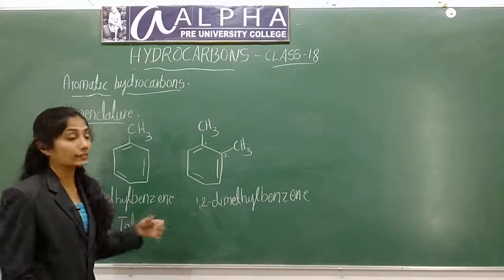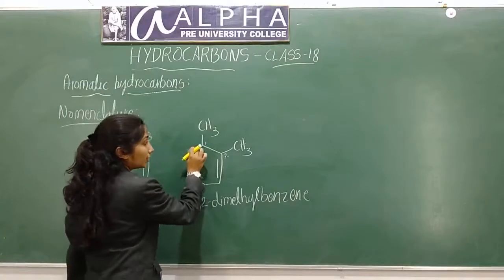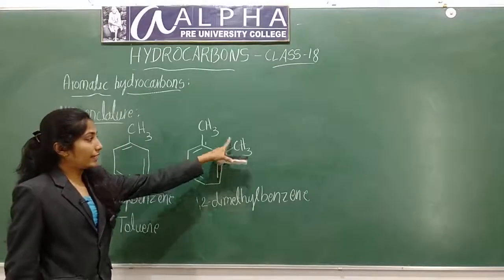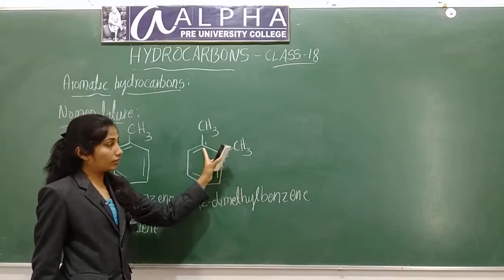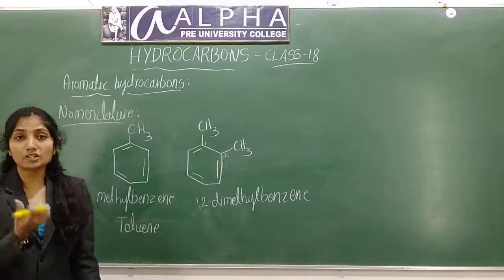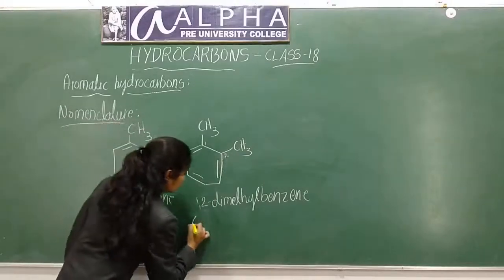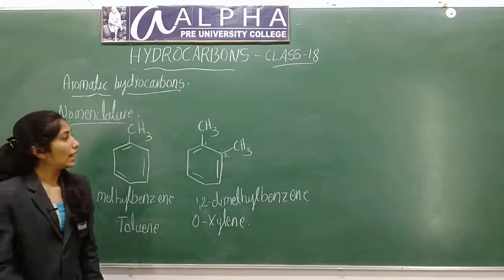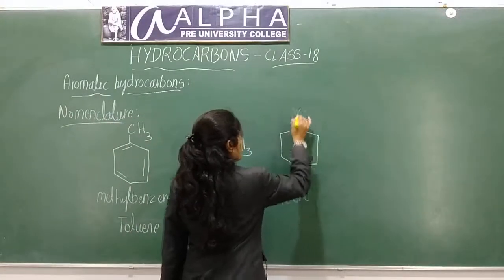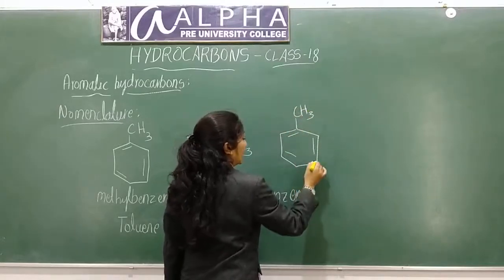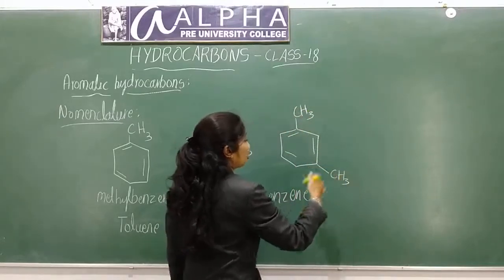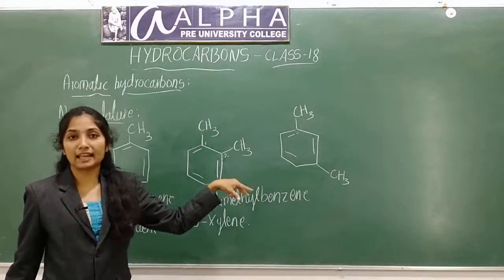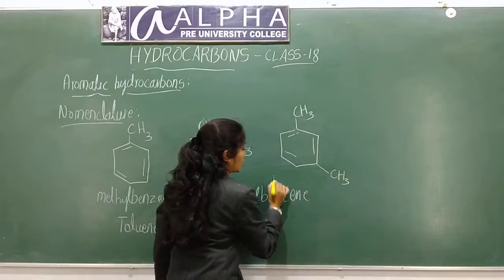The common name for 1,2-dimethylbenzene is ortho-xylene. If I consider this as the first position, the second CH3 is at the 1,2 position, which is the ortho position. Writing one more compound with CH3 at the 1,3 position gives meta-xylene.